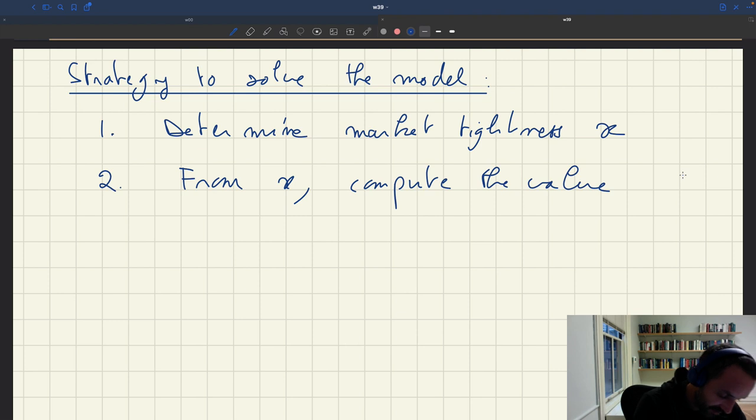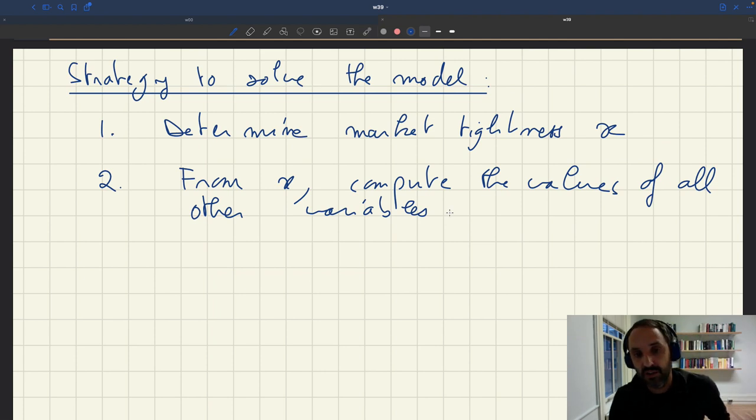And two, from x, let's compute the values of all other variables. And so what I want to show you is just how once we have x, we'll be able to get the value of all the other variables. That's why we don't need to worry about solving for anything else. We just need to solve for x and then we'll be able to back out everything, which is quite convenient.